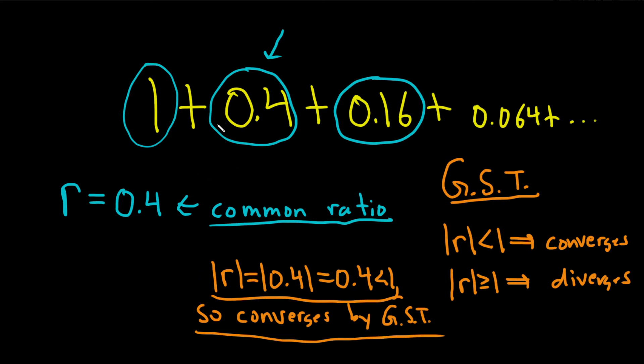So whenever you have a geometric series and you're looking for the sum, all you have to do is take the first term—in this case, it's 1—and then divide by 1 minus r. So 1 minus 0.4. It's always the first number here, whatever you have here, and then divide by 1 minus r, always.